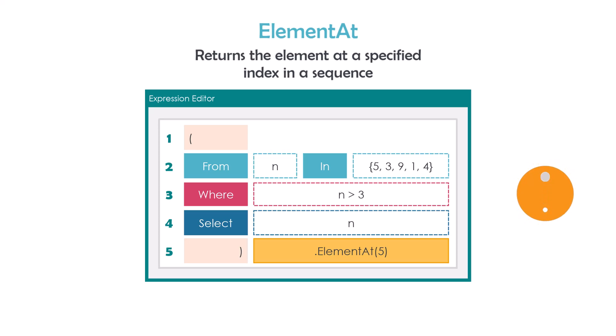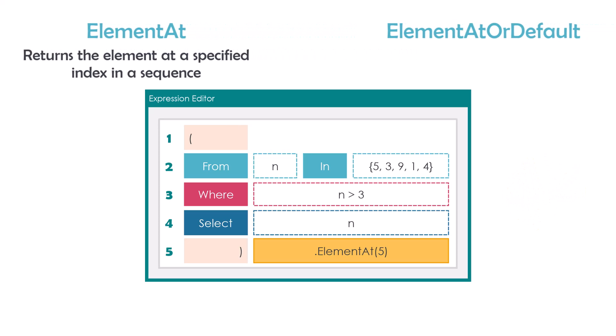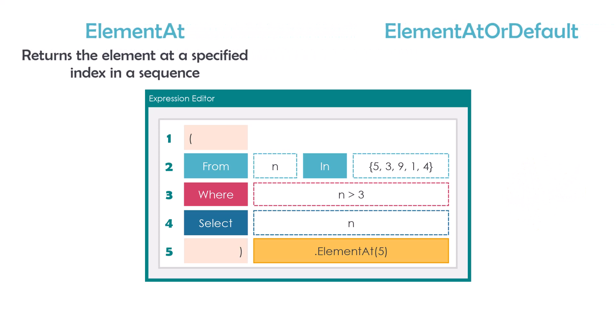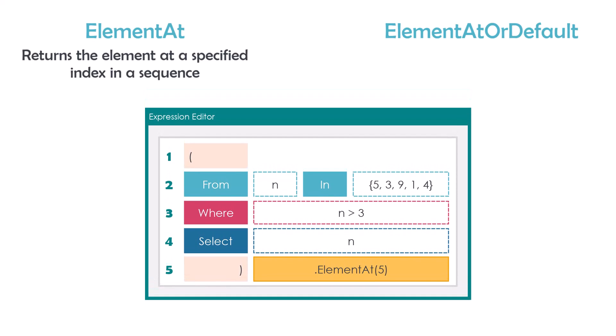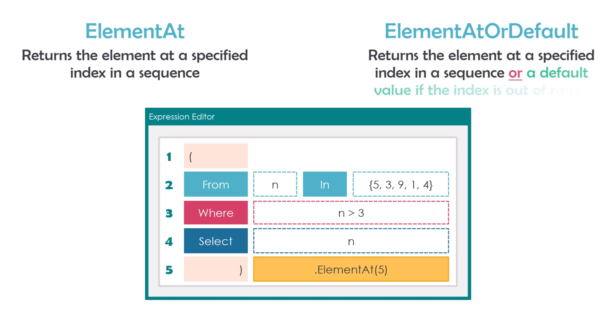How can we fix that? We can use the second operator, ElementAt or default. This operator also returns the element at a specified index in a sequence, or a default value if the index is out of range. This means if we have the index in the sequence, we will get the element at that index. But if we don't have the index, we will get the default value as output.